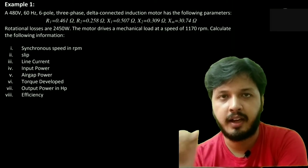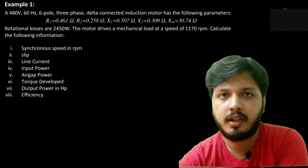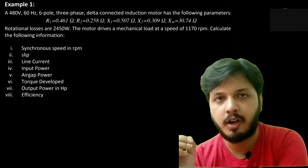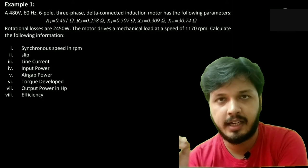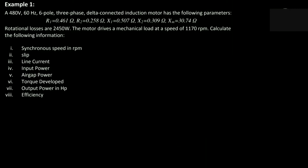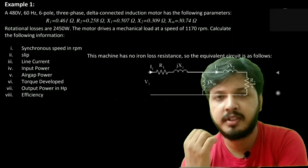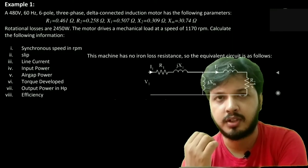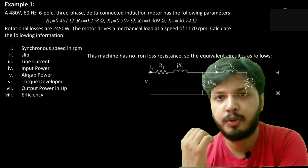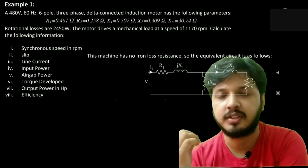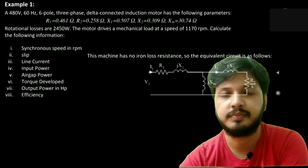Synchronous speed in rpm, slip, line current, input power, air gap power, torque developed, output power, horsepower, and efficiency. There is no information given about the iron loss in the question, so the iron loss component RC will be absent in the equivalent circuit. So equivalent circuit will look like this.